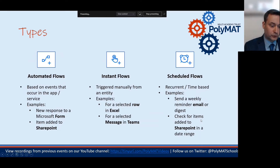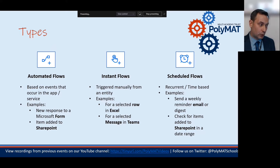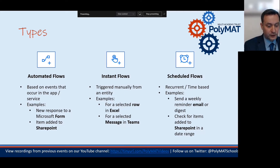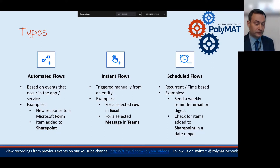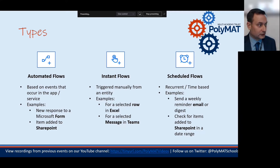There are three main types of flow, and these are the three most useful in the education sphere. The first is an automated flow — a flow based upon something happening that causes something else to happen. For instance, a new response submitted to a Microsoft Form, whether a quiz or a parent survey, can be used as a trigger. Similarly, an item added to a SharePoint list could trigger an automated flow.